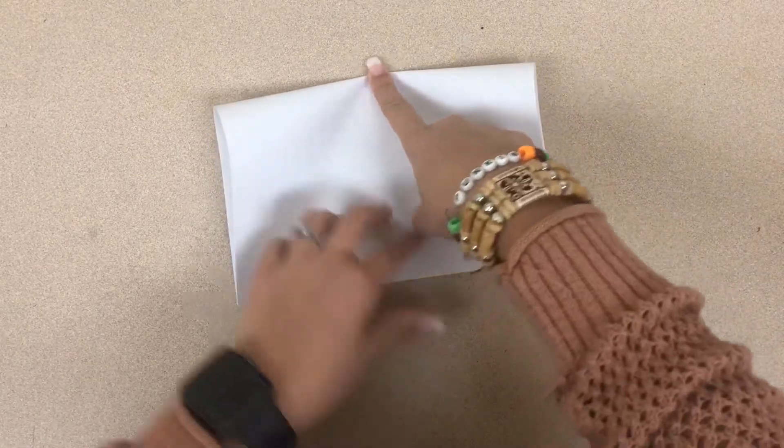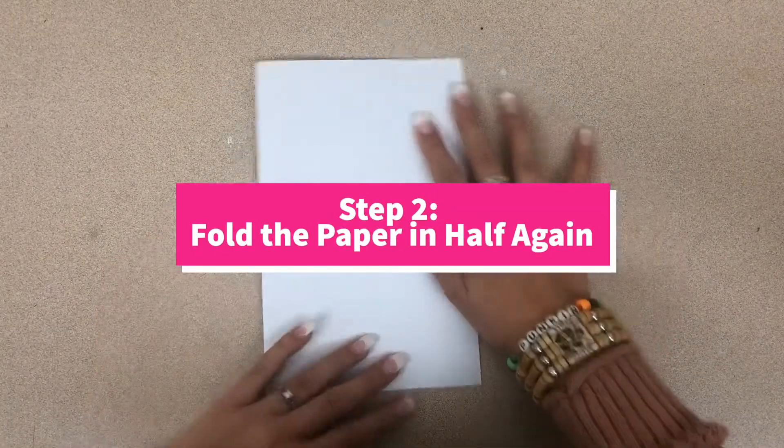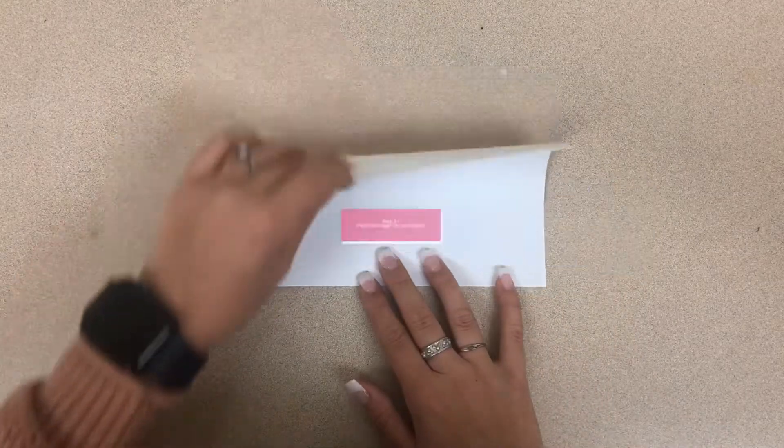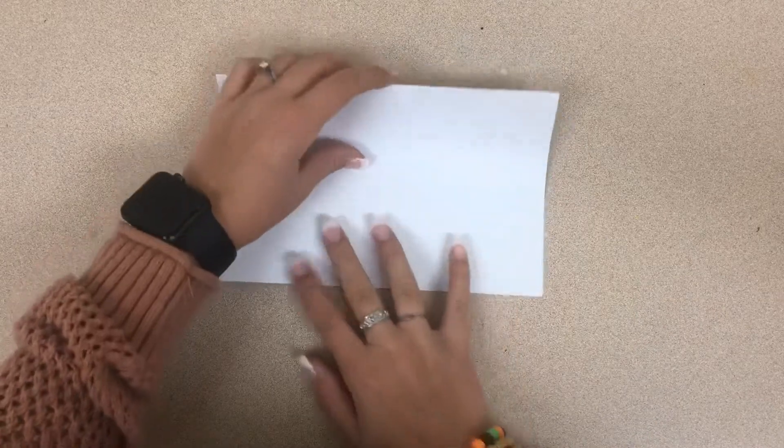Now we're going to fold this in half again, but now it'll be hot dog style - it'll be longways. We're going to fold it again horizontally, so bring the far end to you and match up the two corners.